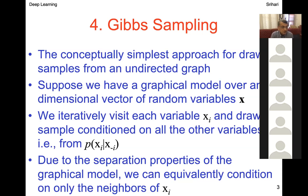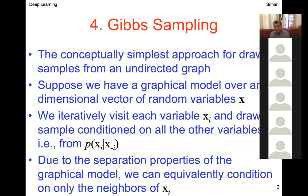We have to run through all the variables before we get one sample, since a state is defined by values for all the variables. Due to the separation properties of the graphical model, we can condition only on the neighbors of X_i. If you're dealing with a neural network with millions of variables, how can you generate one value conditioned on all the others? The separation property of undirected models says we condition only on the neighbors — given those values, we can generate.